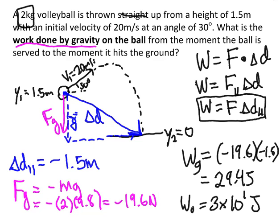Notice it's a positive work, because your delta D is overall downward and the force is also overall downward. If your force is pulling you in the direction your delta D is going, that's a positive work. These are both negative numbers — a negative times a negative gives you a positive. The only time you get a negative work is if your force is opposing the direction you're trying to go: maybe you're trying to go up and your force is down, or vice versa. But here the ball is moving down and the force is down, so that's a positive work.